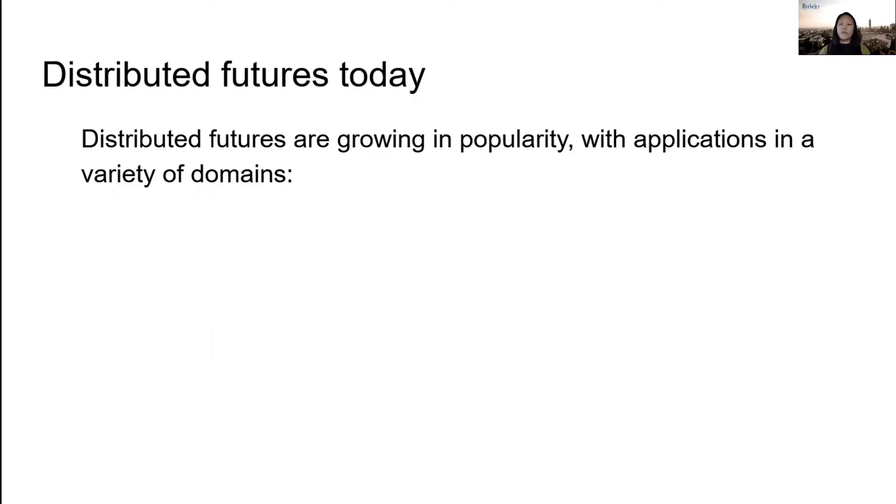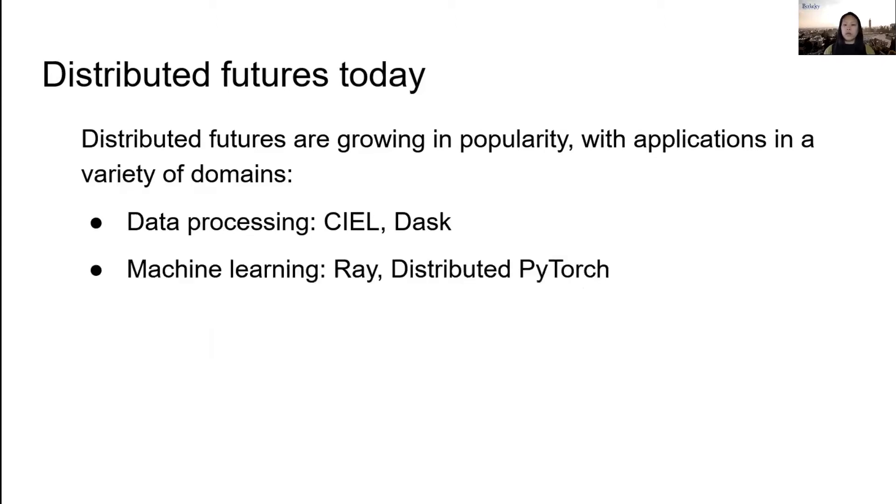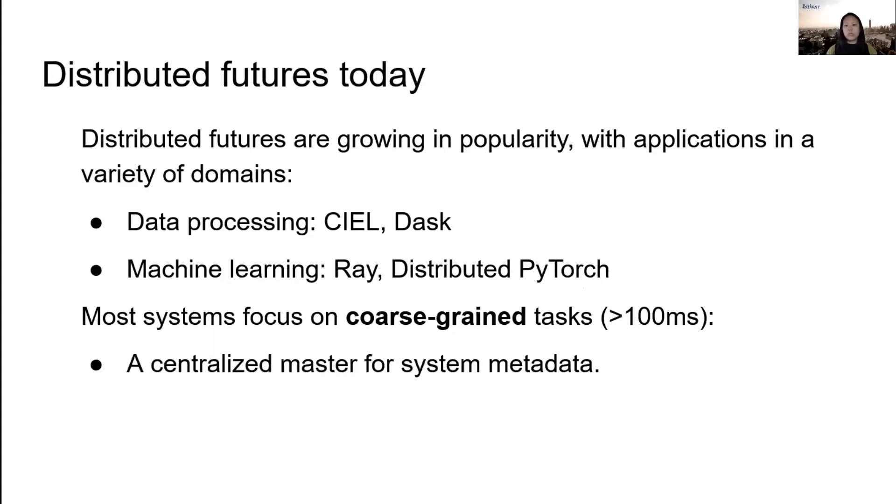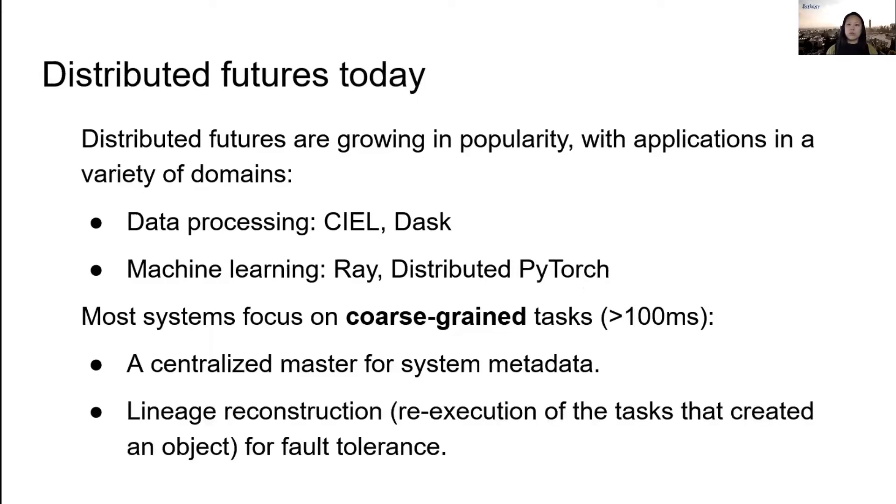These systems target a wide variety of applications, from data processing to machine learning. Many of these systems focus on tasks that run in hundreds of milliseconds or more. The common approach is to use a centralized master that coordinates execution. For fault tolerance, the master stores object lineage for the subgraph of tasks that created an object, and the master re-executes the lineage if an object is lost.